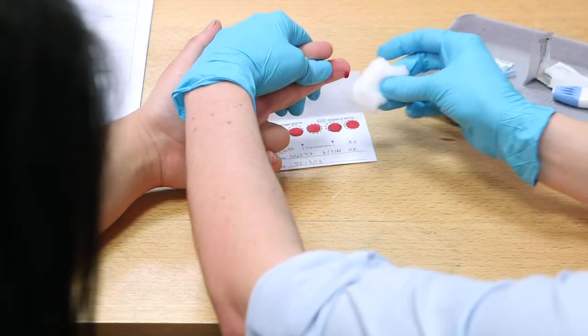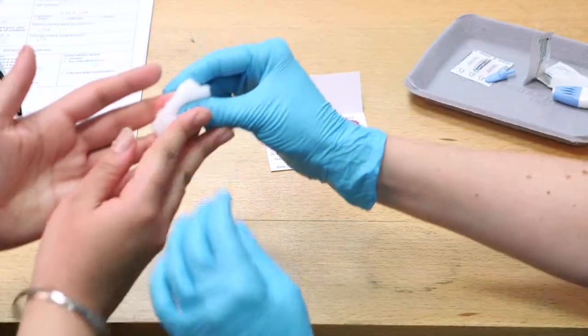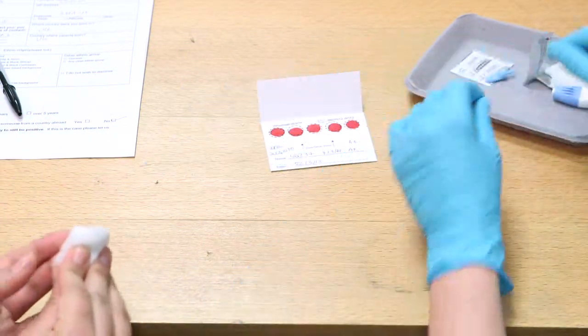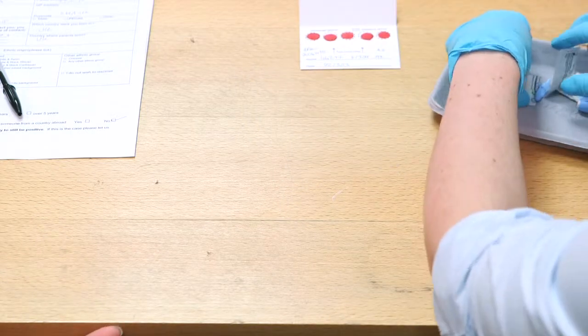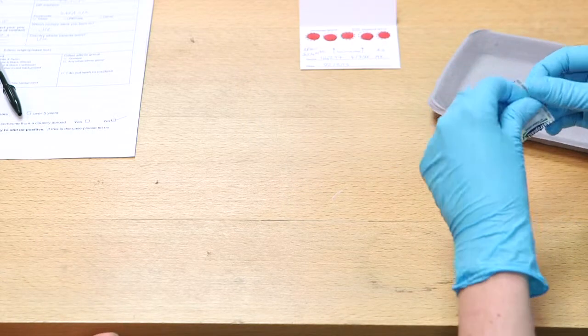When you have collected all five blood spots, give the client a piece of cotton wool to apply pressure to their finger. Next, offer them a plaster to place over the finger prick.